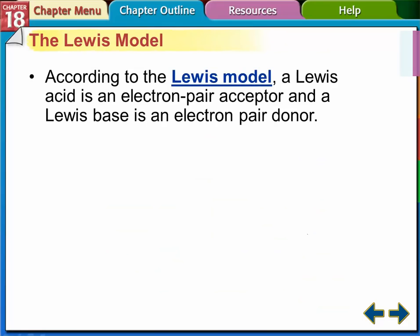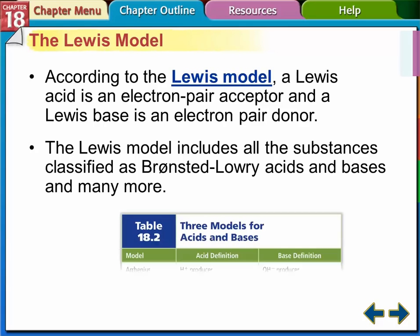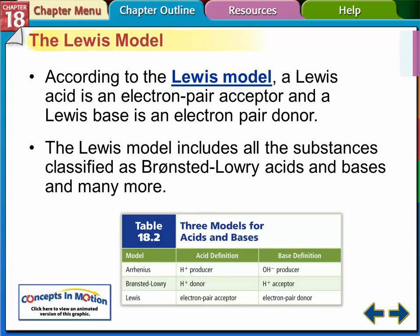The last model to touch on is the Lewis model. A Lewis acid is an electron pair acceptor, and a Lewis base is an electron pair donor. We're not going to use this one too much in this class, even though it's more inclusive — it covers everything the Bronsted-Lowry model does and more. The Bronsted-Lowry model is the one we'll use the most. That's it for this video — answer the questions below and I'll see you tomorrow in class.